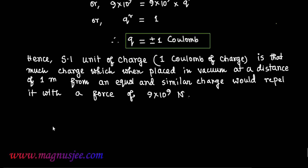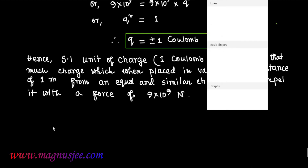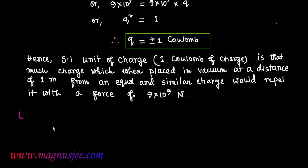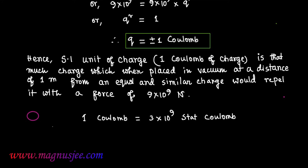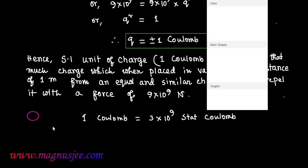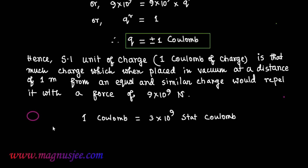In addition to this, we can relate the SI unit of charge to the CGS unit of charge. The CGS unit of charge is the stat coulomb. 1 Coulomb is equal to 3 × 10⁹ stat coulomb — memorize this value.